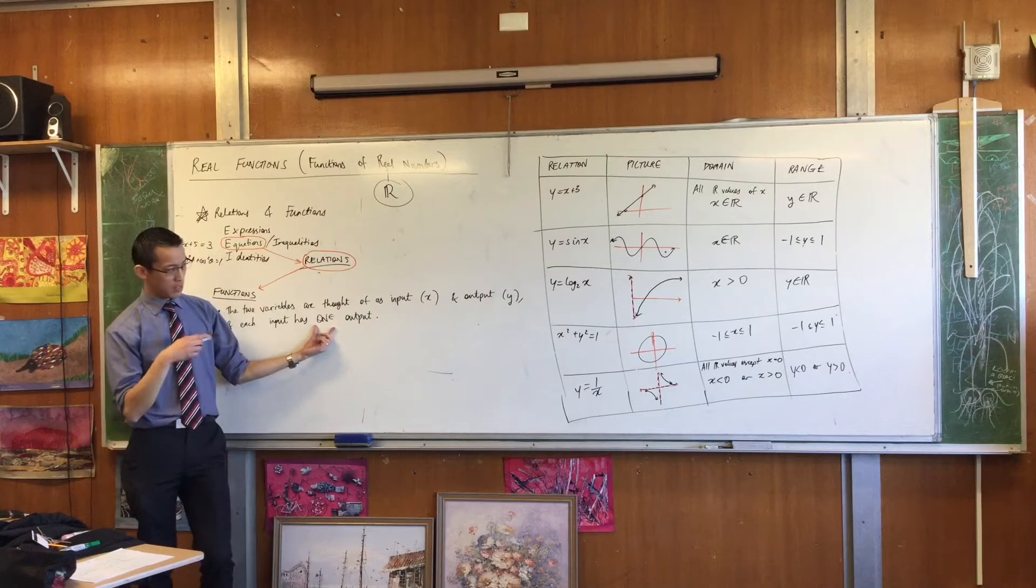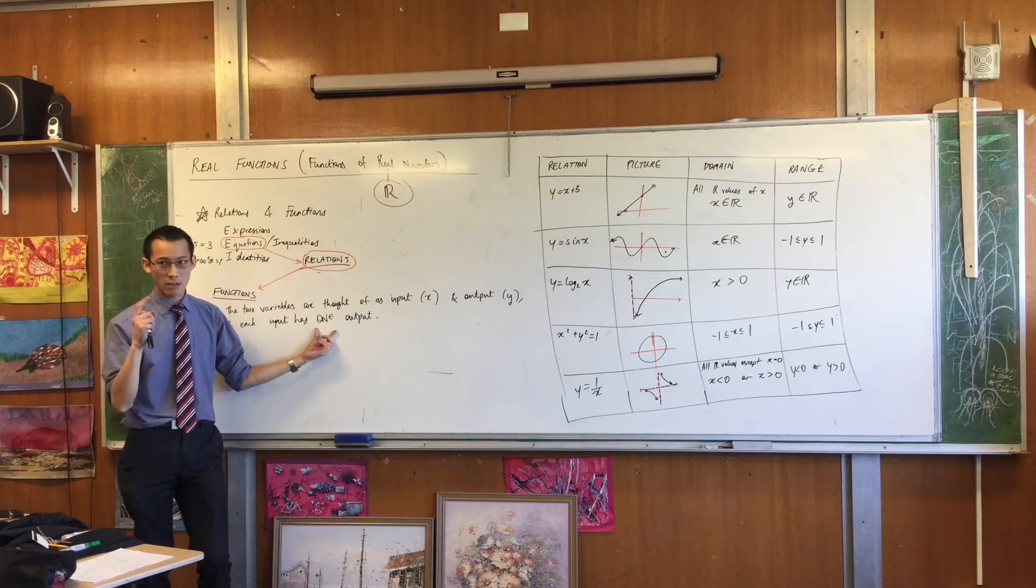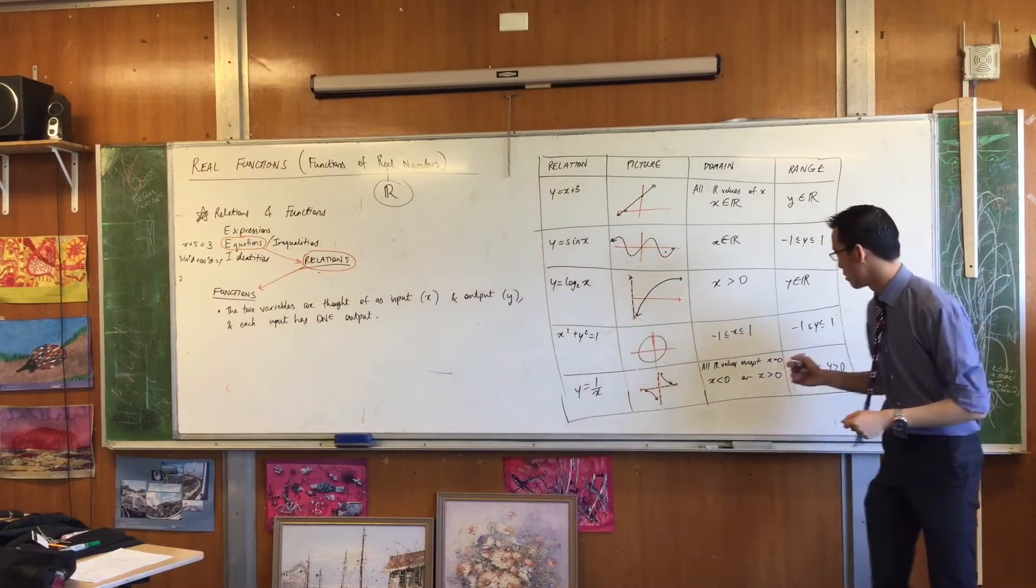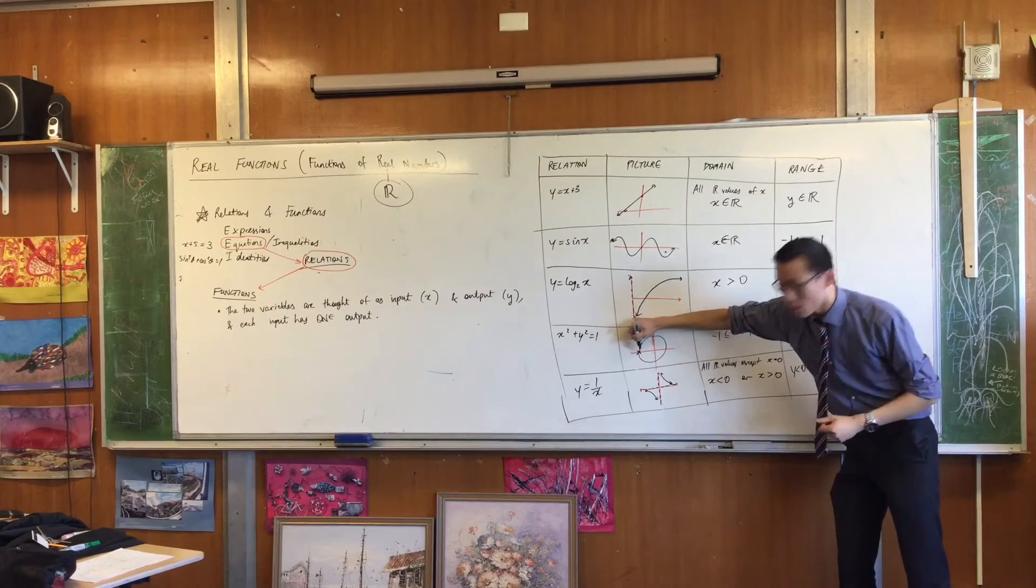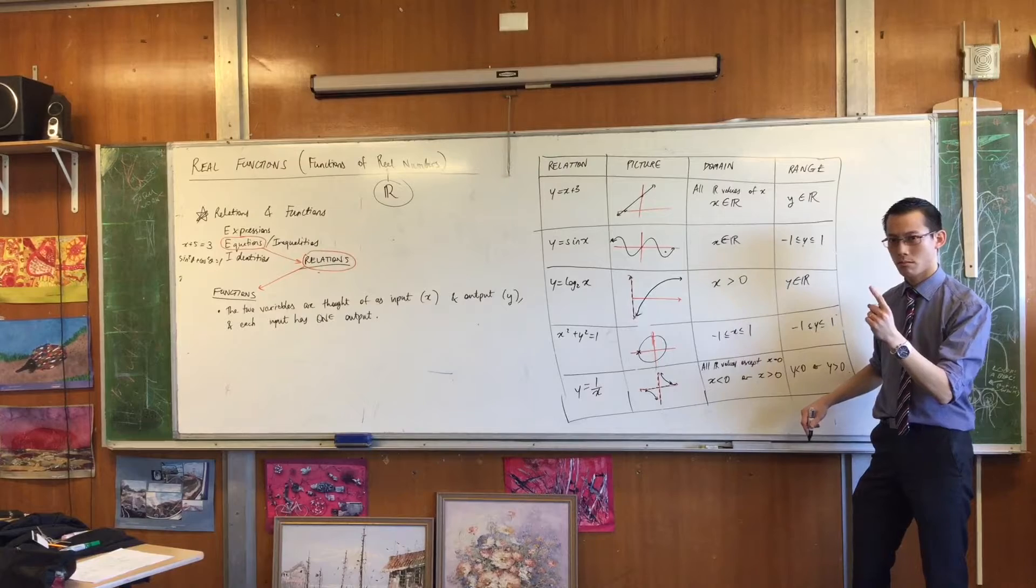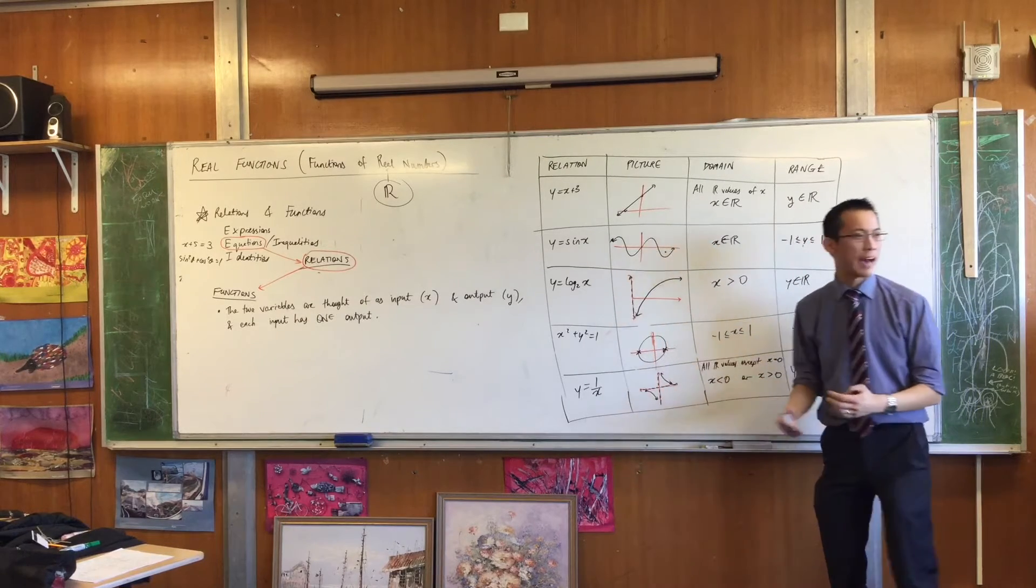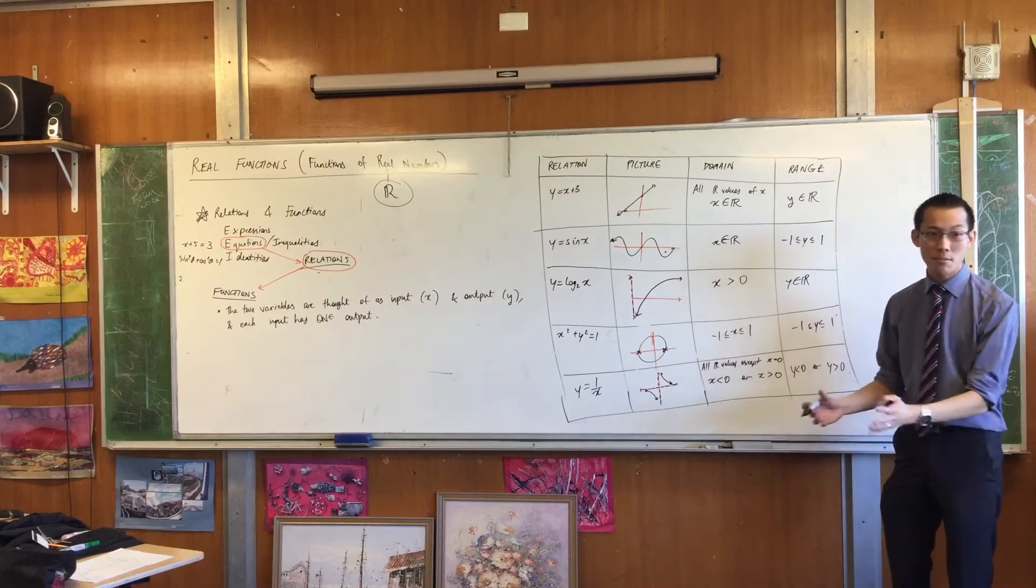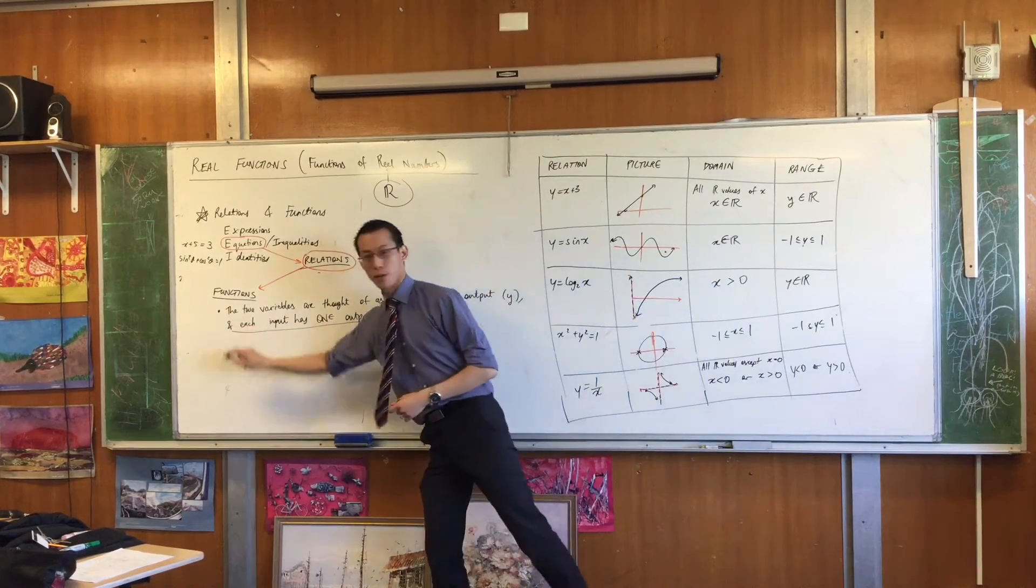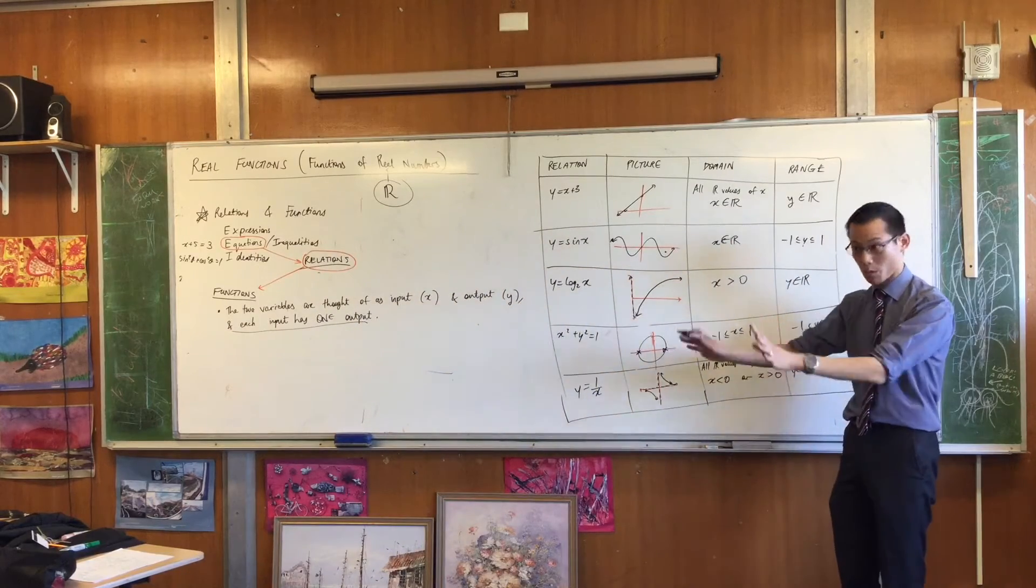Just look back at the circle. There are some inputs, exactly two in fact, that do give you exactly one output. Where are they? Can you see them? x equals negative one. Do you see that's got exactly one output? Namely, zero. And x equals one also has exactly one output. But it doesn't matter that somewhere it's okay. We needed to have it everywhere. Each input, exactly one output all the time.